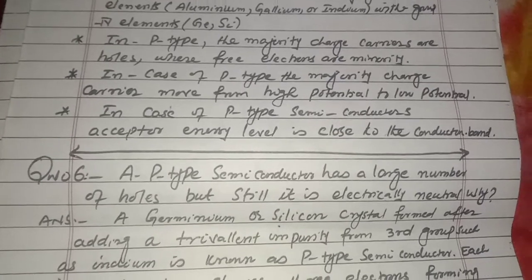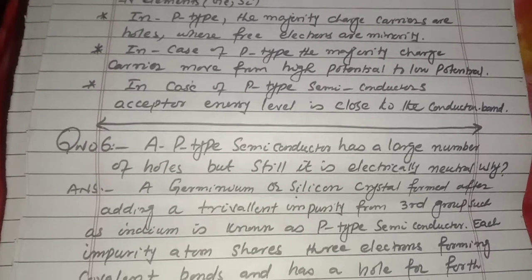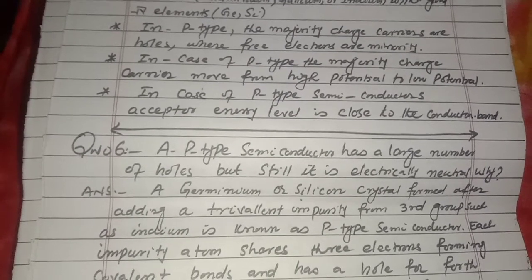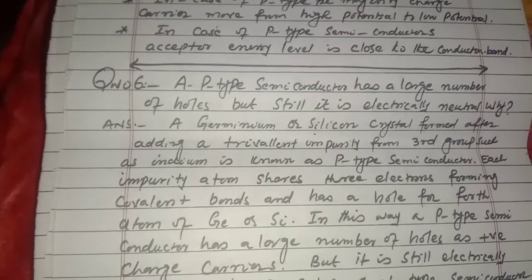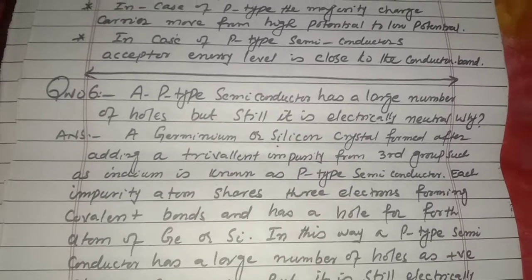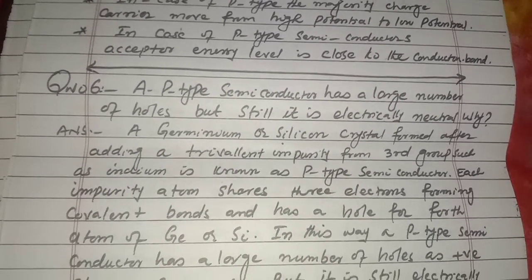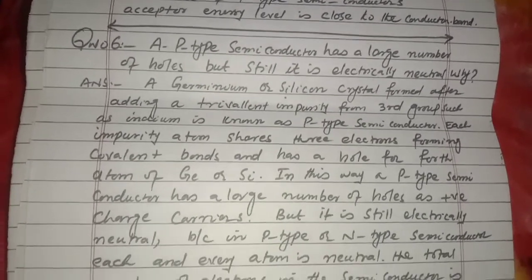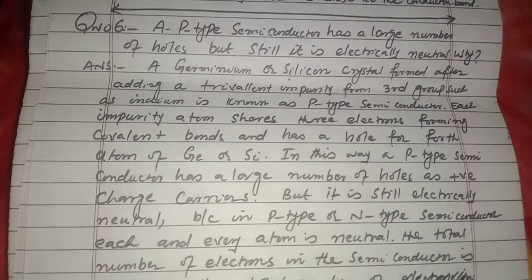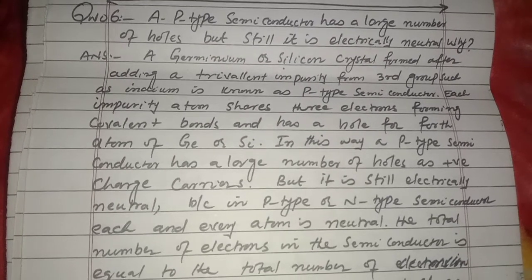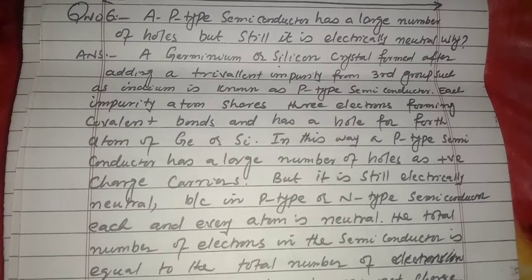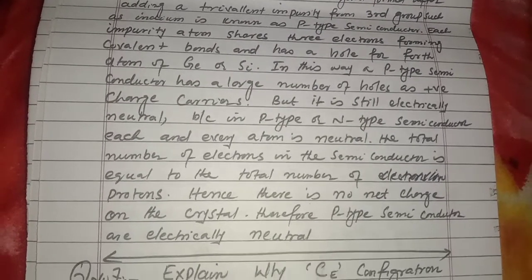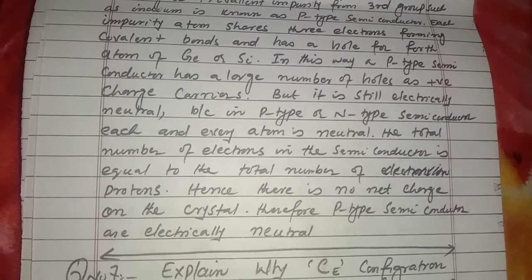Question number 6: a p-type semiconductor has a large number of holes but still it is electrically neutral. Why? A germanium or silicon crystal formed after adding a trivalent impurity from the third group such as indium is known as a p-type semiconductor. Each impurity atom shares three electrons forming covalent bonds and has a hole for the fourth atom of germanium or silicon. So a p-type semiconductor has a large number of holes as positive charge carriers, but it is still electrically neutral because each and every atom is neutral. The total number of electrons equals the total number of protons, so there is no net charge on the crystal. Therefore p-type semiconductors are electrically neutral.